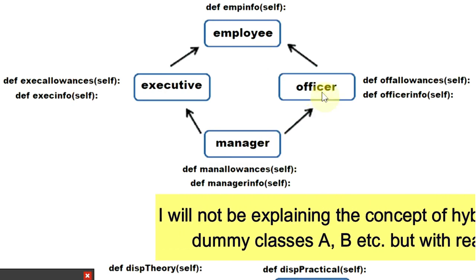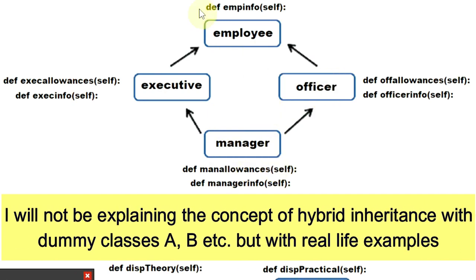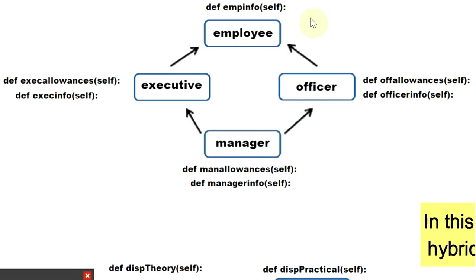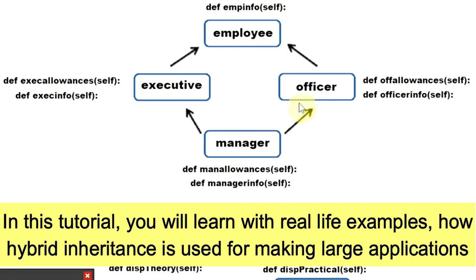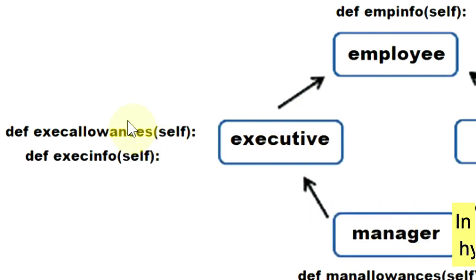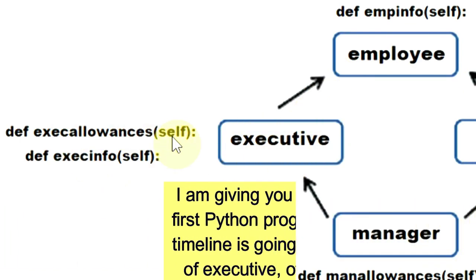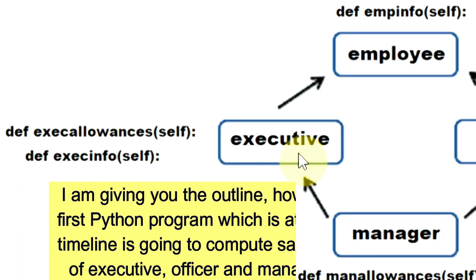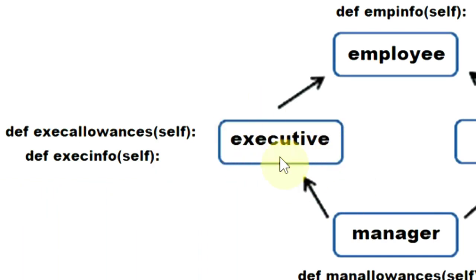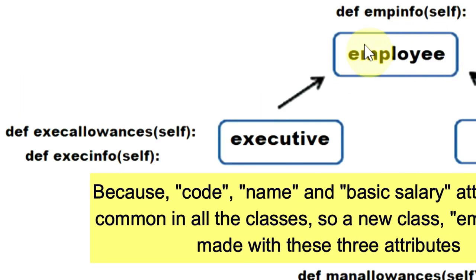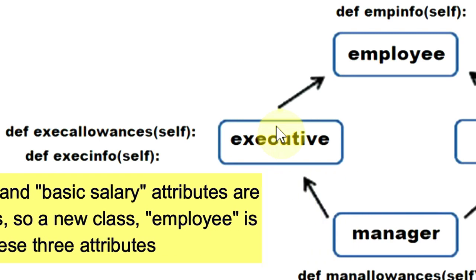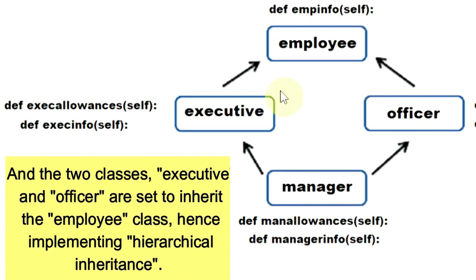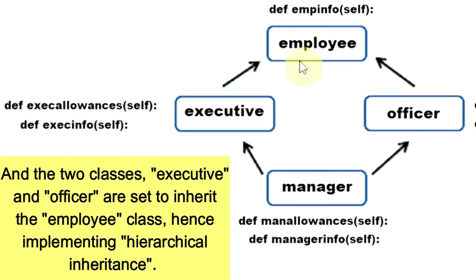Let us understand with a diagram. We will make programs for both examples. The Employee class has an empInfo function which displays code, name and salary. There is an Executive class that inherits Employee. It has two functions: execAllowances which calculates allowances for the executive, and execInfo which displays those allowances. The object of Executive class can access both its functions and the empInfo function, since code, name and salary are needed in all three classes — Executive, Officer and Manager.